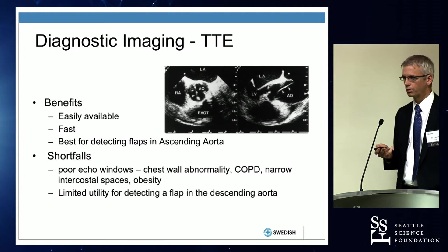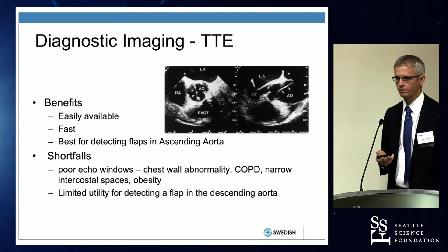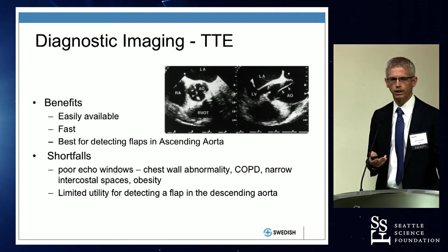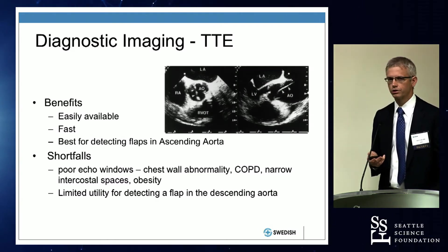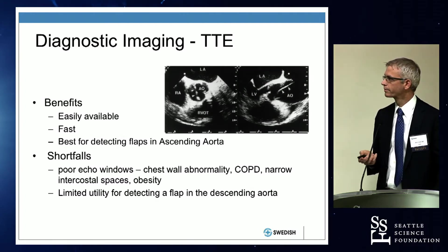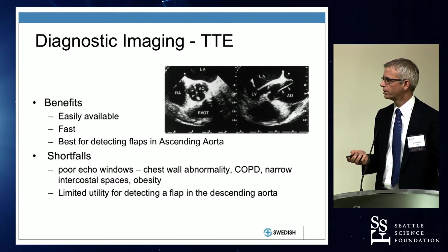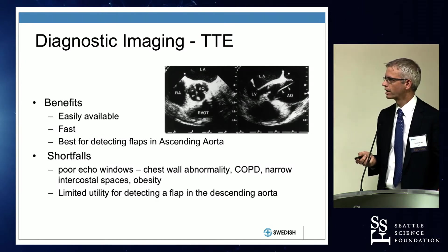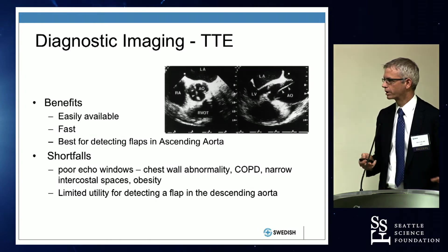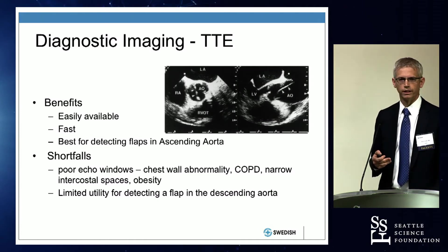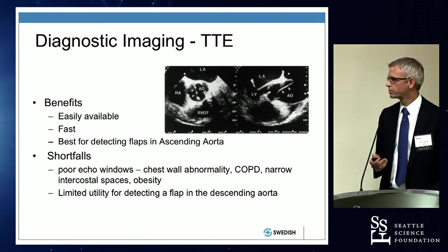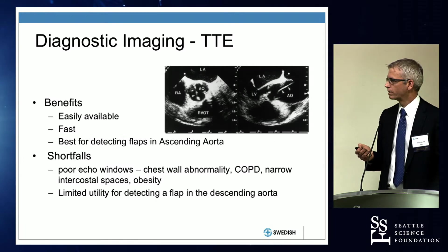We're fortunate to have great imaging, but sometimes patients go to smaller hospitals without CT scans. They may have ultrasound, so they could do a transthoracic echo — it's easily available and can detect flaps. However, a transthoracic echo is difficult because of poor echo windows; somebody could be obese, have COPD where the lungs get in the way, or have narrow intercostal spaces. If you see a flap, it's useful. If you don't, you still need further investigations.